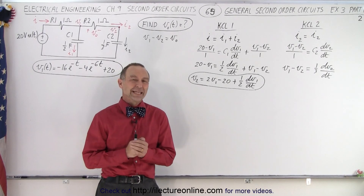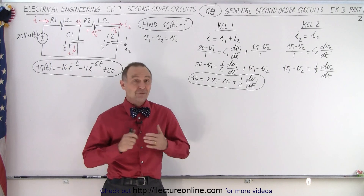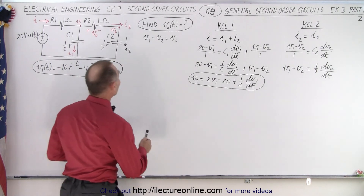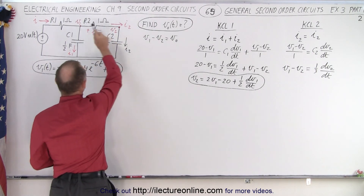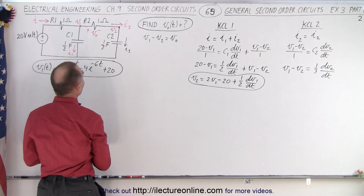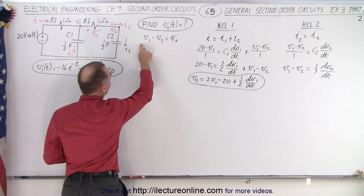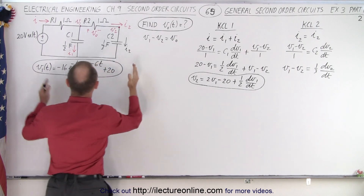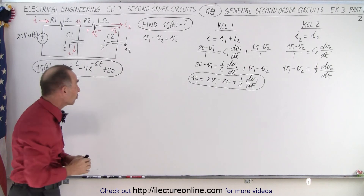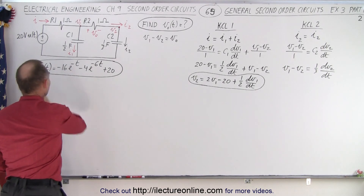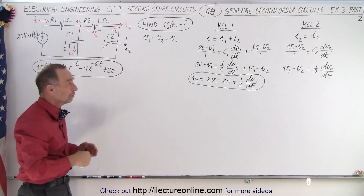Welcome to our lecture online. In the previous video, we were able to go about halfway on this problem. The problem was to find the output voltage as a function of time — an equation that describes that. In order to do that, we assume that the output voltage is going to be the difference between V1 and V2. In the previous video, we found the equation that described V1 as a function of time. So now we need to find V2 as a function of time.